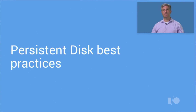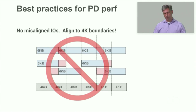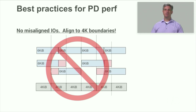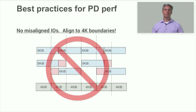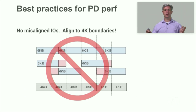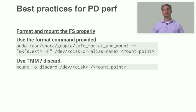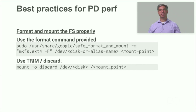Now let's switch over to general best practices, focusing on persistent disk. Most of the best practices are about performance. The first performance tip comes from the fact that PD works with 4-kilobyte IO boundaries. Any misaligned IO will dramatically lower performance — all PD IO should be multiples of 4 kilobytes and aligned to 4-kilobyte boundaries. Disk partitions and their file systems must be aligned to those 4K boundaries. The easiest way to ensure this is to have a simple partitioning scheme with a single partition for the volume and to format that partition using the Google-provided safe format and mount script. The operating system and application stack should do everything else for you. If you mount your file systems on your own, please make sure to mount with the discard option. The discard option makes format times much faster, makes snapshots smaller, faster to take, and makes storing those snapshots less expensive.